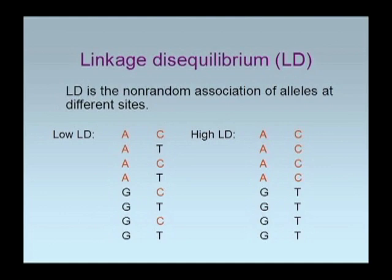In contrast, there are situations where what allele you have at the first site gives you no information about what allele you would have at the second site. If you have an A at the first site, it does not tell you anything about whether you would have a C or a T at the second site. Linkage disequilibrium refers to this nonrandom association — the first example has a high level of LD, and this second example would be described as having no or low linkage disequilibrium.